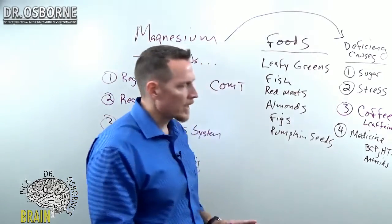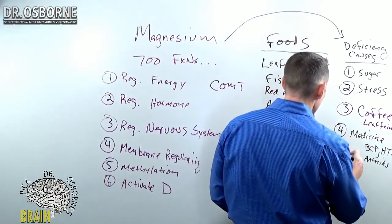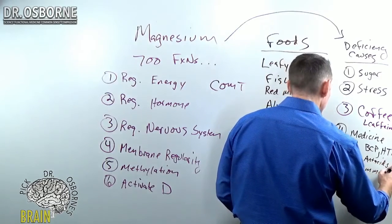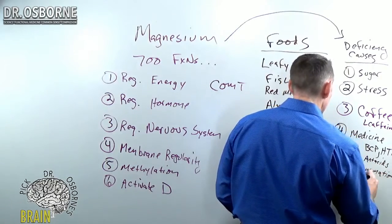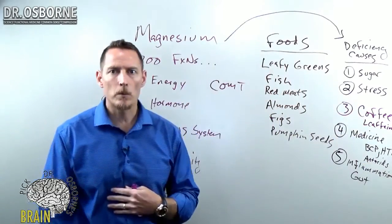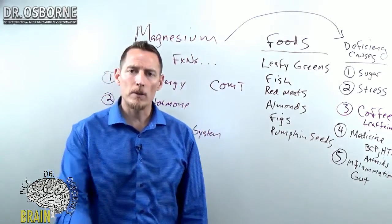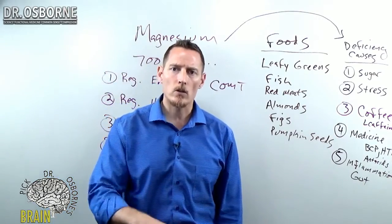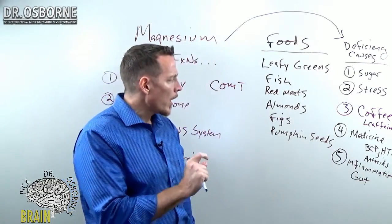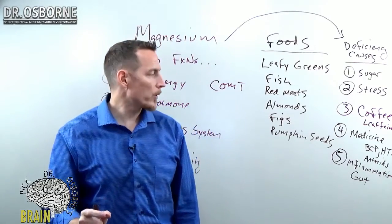Now, there's another thing that causes magnesium deficiency that many of you suffer from, and that goes back to inflammation of the gut. So if your gut's broken, you're not absorbing very well. And where does magnesium get absorbed? It gets absorbed in the small intestine. So if your gut's on fire, if you've got an inflammatory bowel disease like celiac disease, Crohn's, or ulcerative colitis,